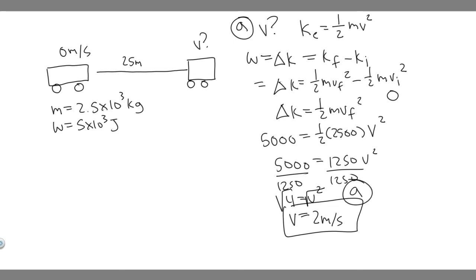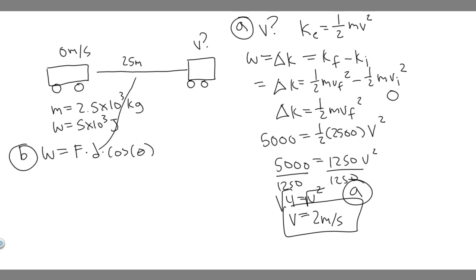Now let's solve for Part B: the horizontal force exerted on the car. We're given work and distance. The formula is: work equals force times distance times cosine of theta. We know the work, we're solving for the force, the distance is 25 meters, and theta is 0 because the force and direction of motion are the same — so cosine of theta equals 1. So work simply equals force times distance.